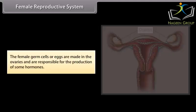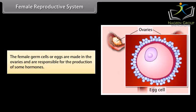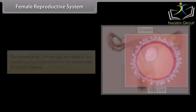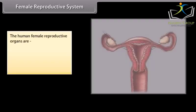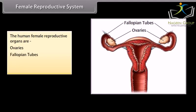The female germ cells or eggs are made in the ovaries, which are also responsible for the production of some hormones. The human female reproductive organs are: ovaries, fallopian tubes, uterus, and vagina.